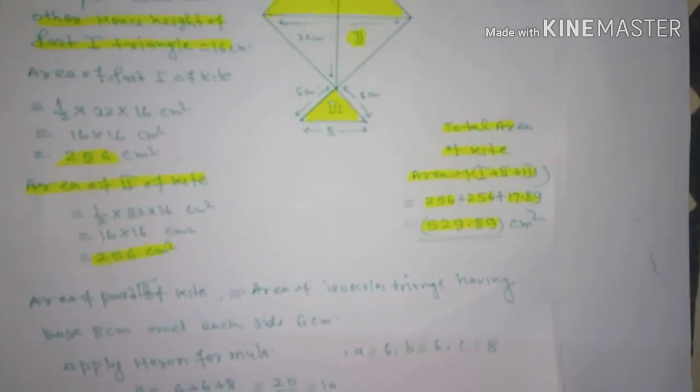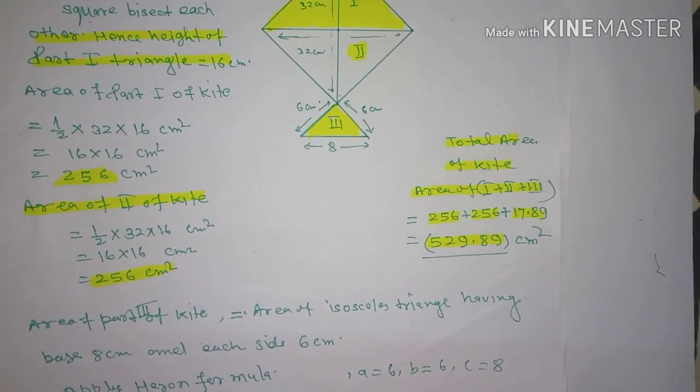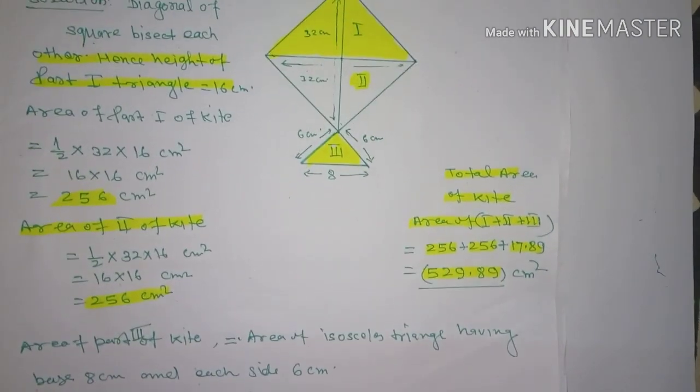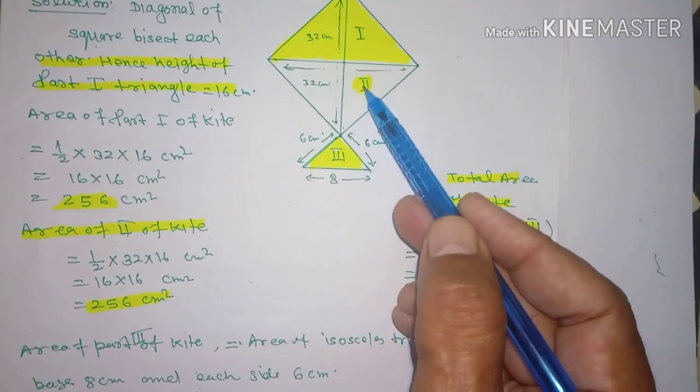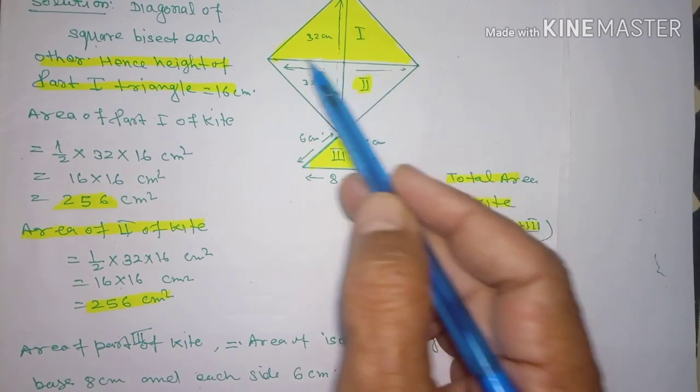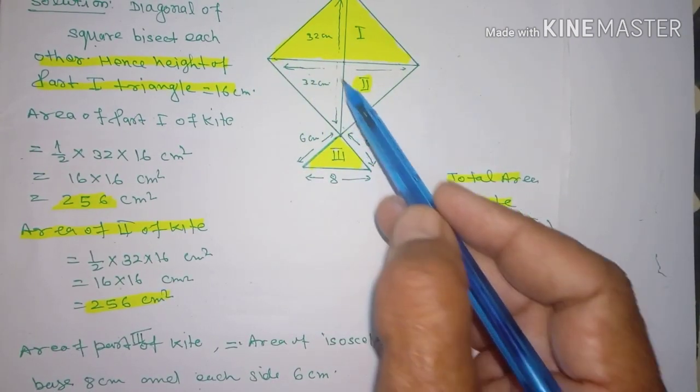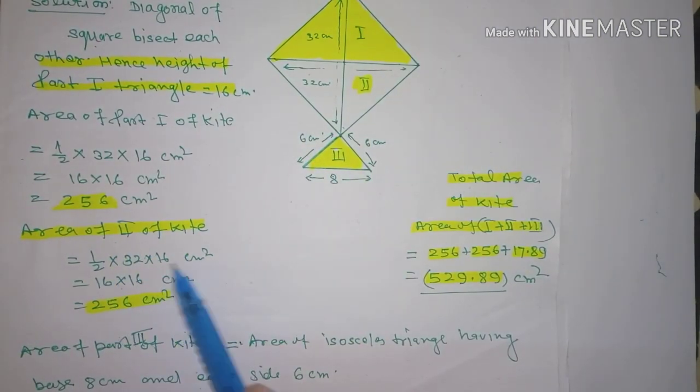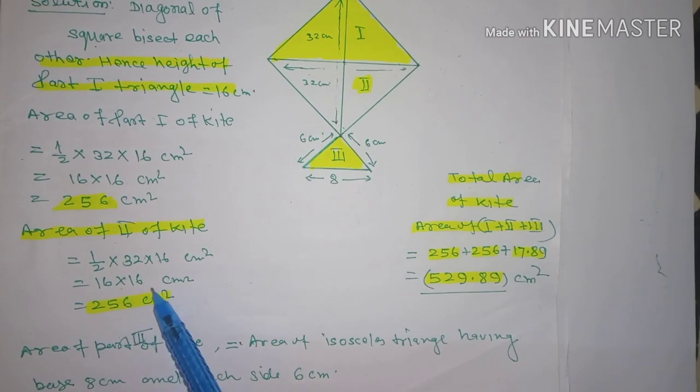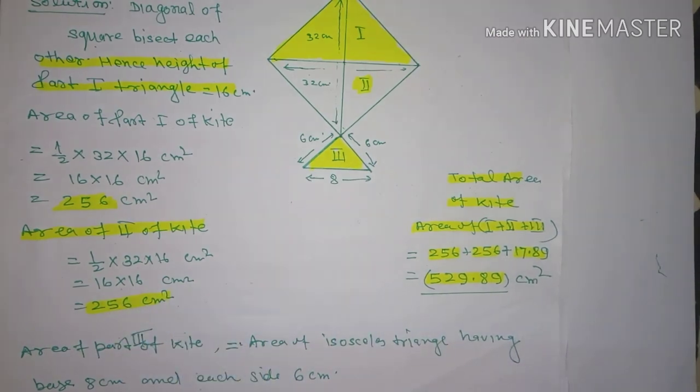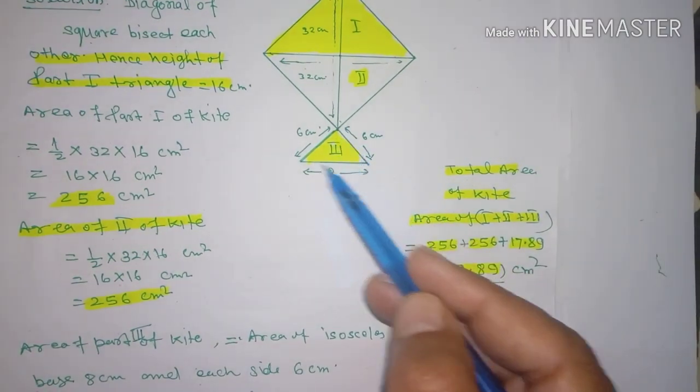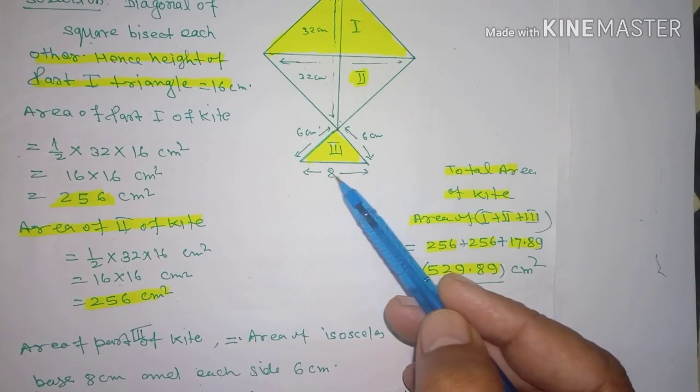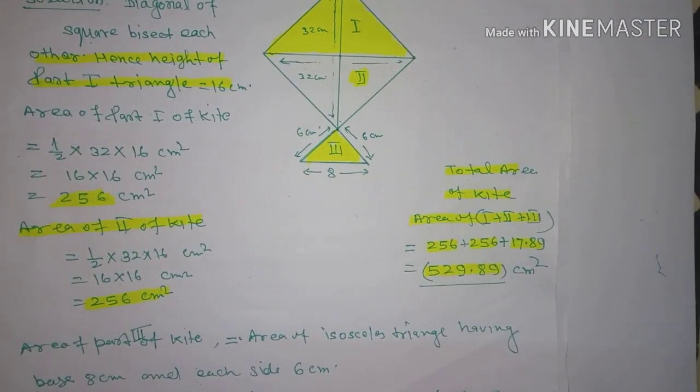This is the second part of the kite, it is the same. The base and height are also the same. The area is the same, 256 cm². Now let's talk about the third part.